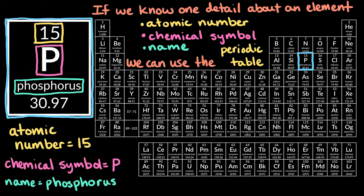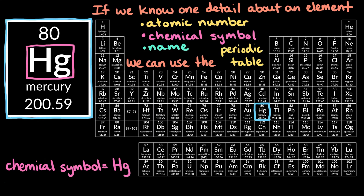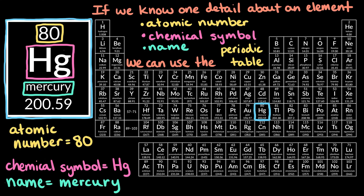Let's do another example. Say we know the chemical symbol Hg. What is this element's name, and how many protons does it have? Here is the symbol Hg on the periodic table. Its name is Mercury, and its atomic number is 80, so it has 80 protons.